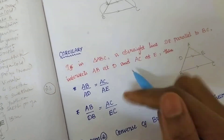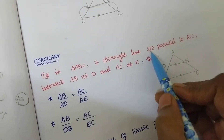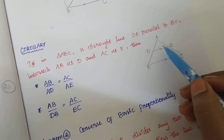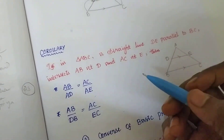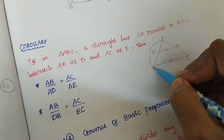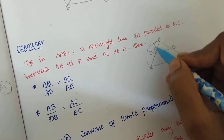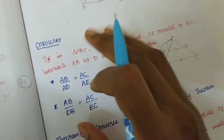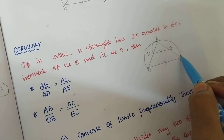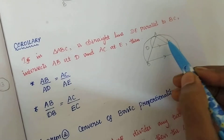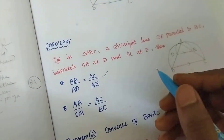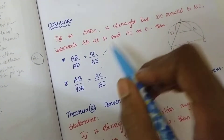Then the corollary: if in triangle ABC, a straight line DE is parallel to BC, then by the Basic Proportionality Theorem we can write: AB/AD = AC/AE. That's the format given. This is the corollary of the basic proportionality theorem — we can write the ratio in terms of the full side divided by the partial segment.